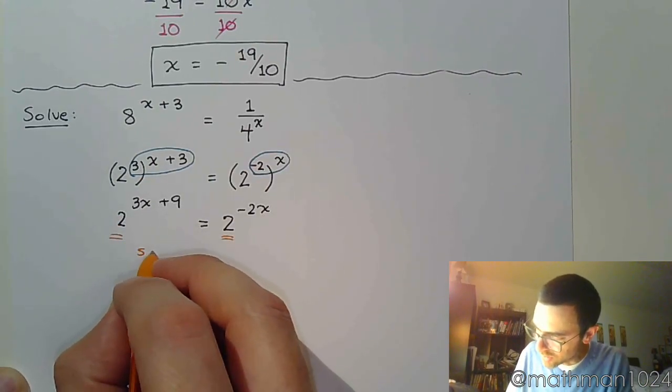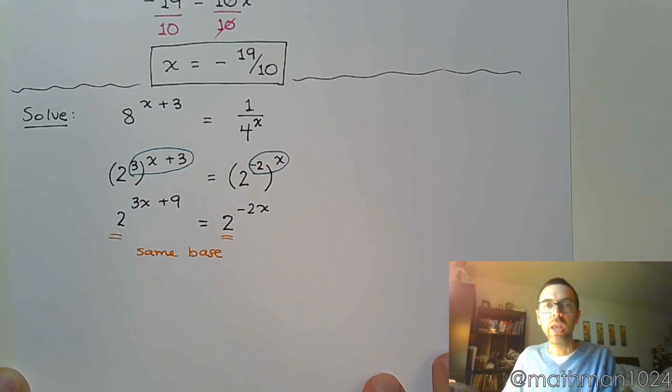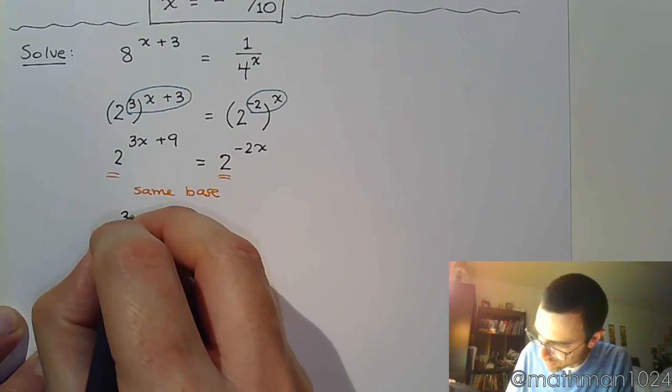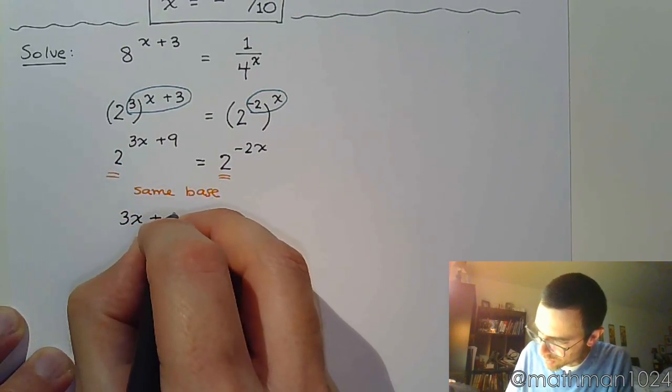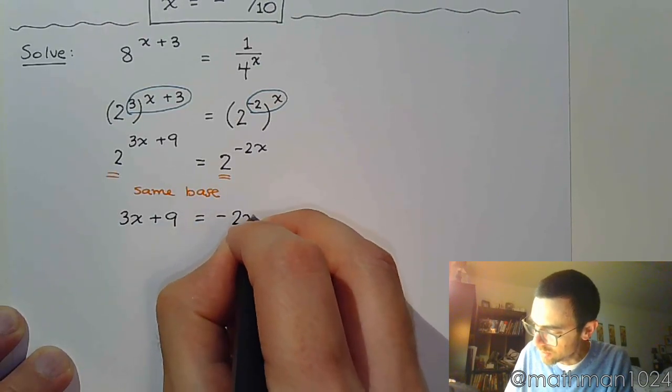And now, these guys have the same base. And, since they have the same base, we can set these powers equal to each other. So, 3x plus 9 is equal to negative 2x.